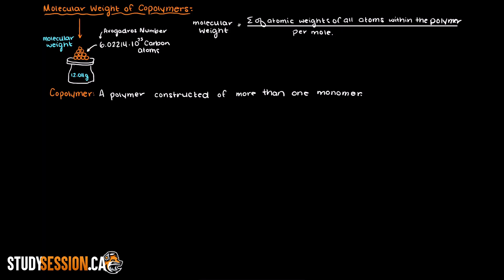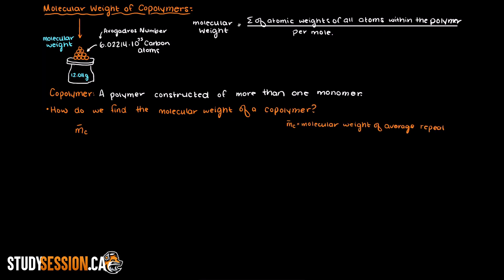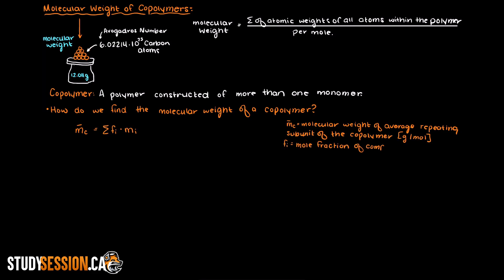Now that we have reviewed what a polymer's molecular weight is and what a copolymer is, let's go over how we find the molecular weight of a copolymer. We can say that mc, the molecular weight of a copolymer's average repeating unit, is equal to the sum of each monomer's mole fraction, which we can call Fi, times the molecular weight of the monomer. This gives us the average molecular weight for a given subunit in this copolymer.